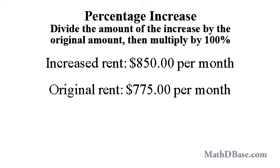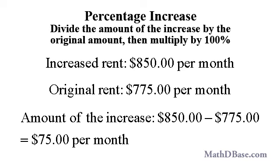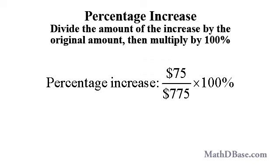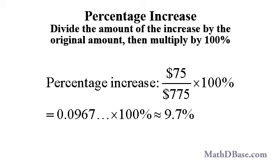If the rent for an apartment increases to $850 per month from $775 per month, how much was the percentage increase? The difference between the new rent and the old rent is $850 minus $775, or $75. So the percentage increase is $75 divided by $775 times 100%, about 0.09677 times 100%, or 9.7%, rounded to 1 decimal place.